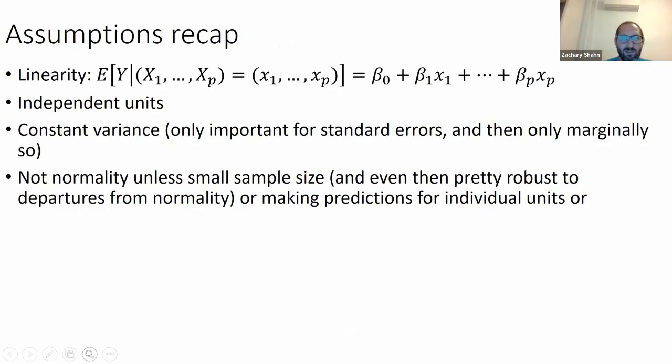To recap the assumptions, this is in declining order of importance. The biggest assumption is linearity. The conditional expectation of Y, given that you observe certain values of the predictors, really is a line, a linear function. So that's by far the biggest assumption. You need the observations to be independent. It can't be a time series or spatially related or something. You need to have constant variance of the outcome given the predictors. The noise needs to have constant variance, not necessarily be normal, but that's only important for standard errors. And you never really need normality unless you have a very small sample size. And even then it's pretty robust to departures from normality, or if you're making predictions for individual units.